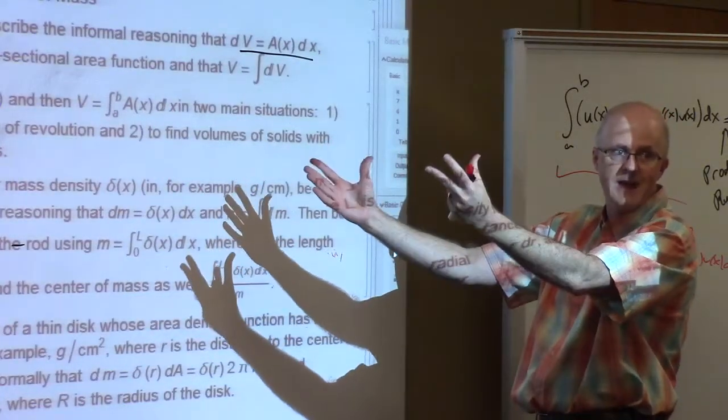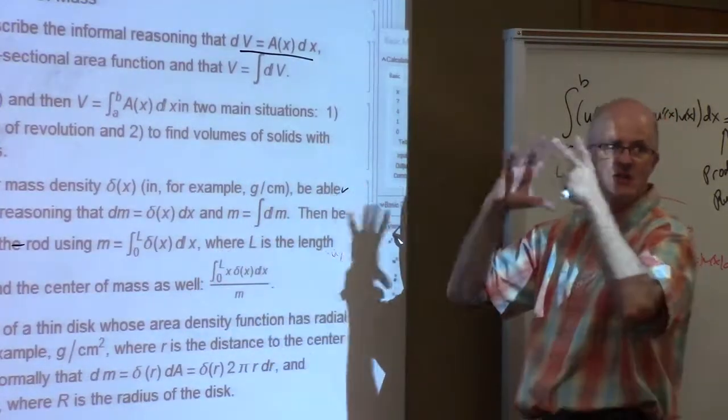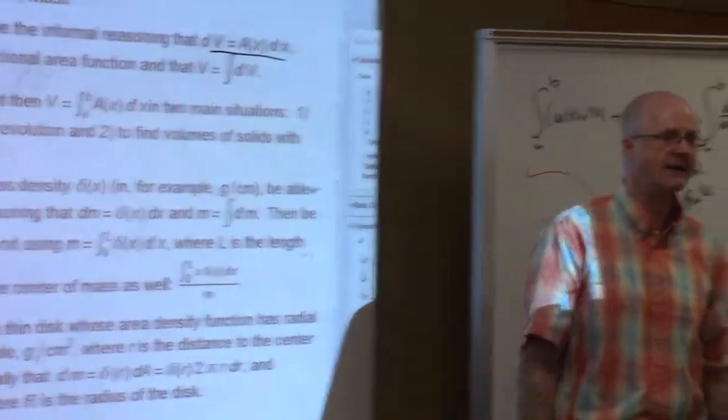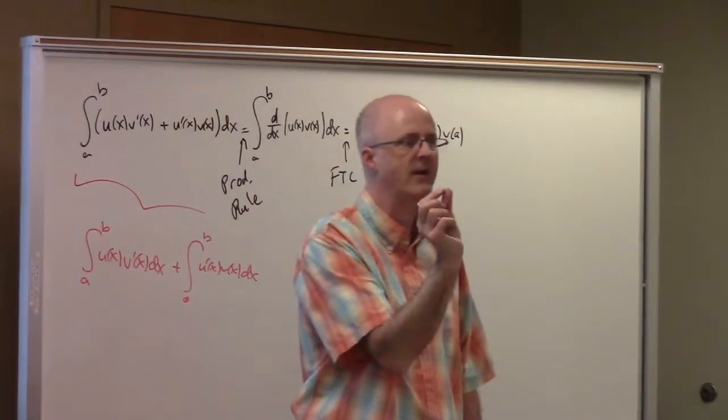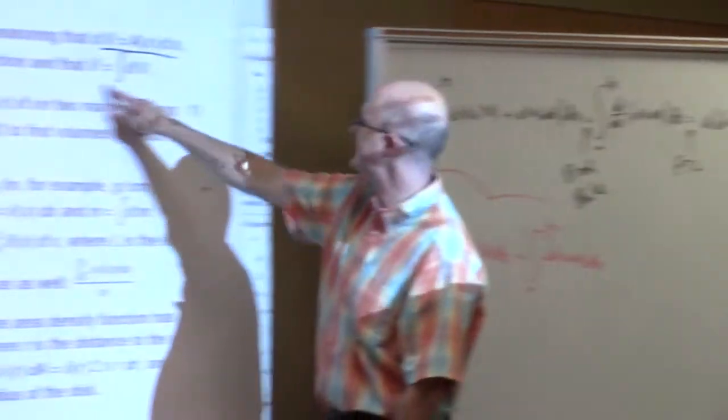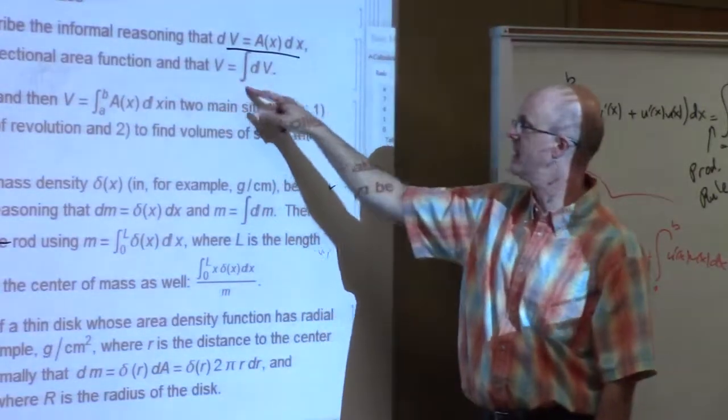What's the area of that? Call it A(x) because it changes as x changes, and this quote-unquote product then gives you the little tiny volume of a little thin wafer that you've sliced. And then informally, this equation says the total volume is the sum of little volumes.